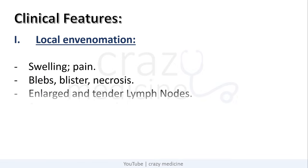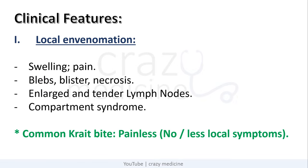Now coming to clinical features — it can be due to local envenomation or systemic envenomation. For local envenomation, it can cause localized pain or swelling, blebs, blisters, or local necrosis. There can be enlarged and tender lymph nodes, and it can also cause compartment syndrome. Remember, in case of common krait bite, it is painless — that is, there are no or very minimal local symptoms.